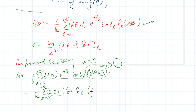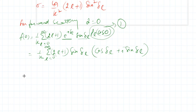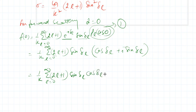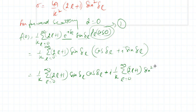Since P_L(cos 0) = P_L(1) = 1, that is the standard result, and expanding e^(iδ_L) as cos(δ_L) + i·sine(δ_L), I can separate f(0) into its real and imaginary parts. The real part is (1/k) Σ (2L+1) sine(δ_L) cos(δ_L), and the imaginary part is (1/k) Σ (2L+1) sine²(δ_L).